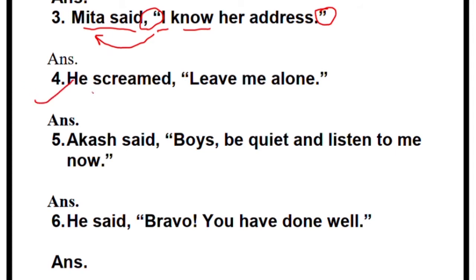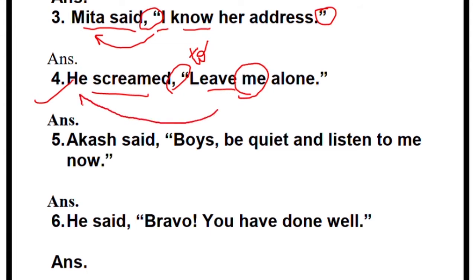Fourth sentence: 'He screamed' — no need to change this. Now we see what kind of sentence this is: 'Leave me alone' — this is an order. So we will use the word 'to' in place of 'that.' 'He screamed to leave...' Who is 'me'? He is talking about himself, so 'me' becomes 'him.' So: 'He screamed to leave him alone.'